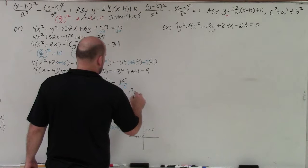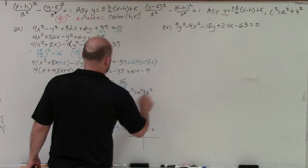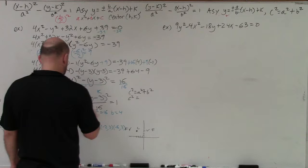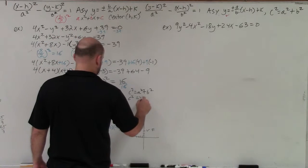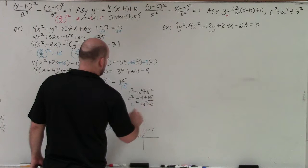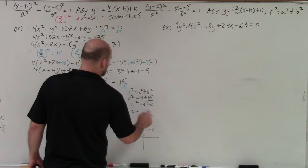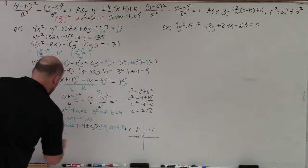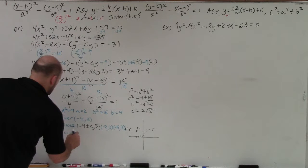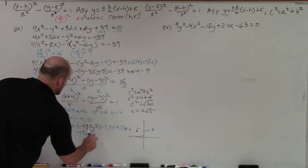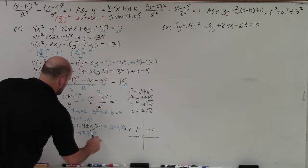So c² = a² + b² = 16 + 4. c² = 20, and c equals the square root of 20, which I can reduce to 2√5. So the foci are at (−4 ± 2√5, 3).